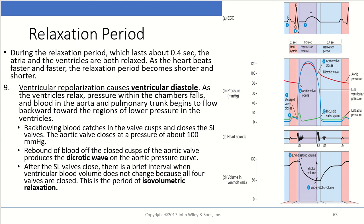This drop in pressure corresponds with blood in the atria and pulmonary trunk beginning to flow backwards toward the region of lower pressure in the ventricles. The back-flowing blood catches in the valve cusps, resulting in the closing of the semilunar valves. The aortic valve closes at a pressure of about 100 millimeters of mercury, and the rebound of this blood off the closed cusp of the aortic valve produces the dicrotic wave on our aortic pressure chart.